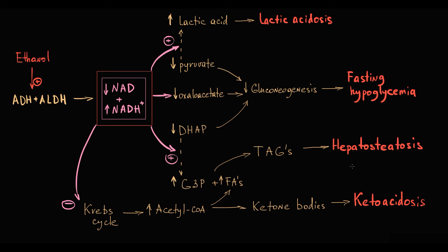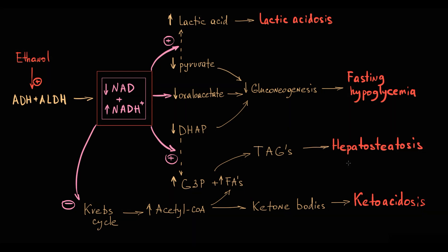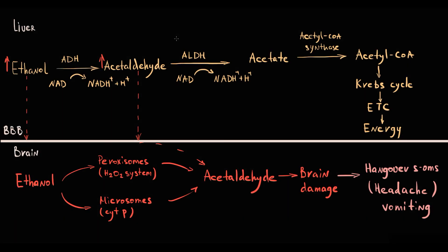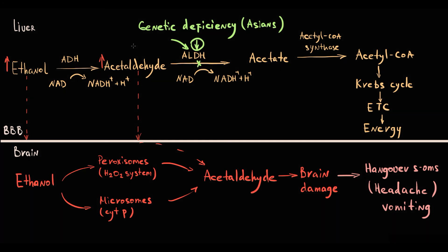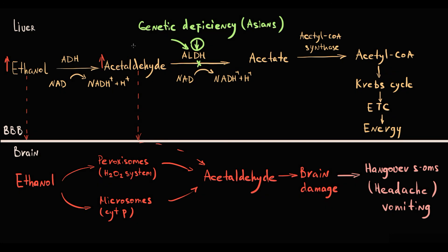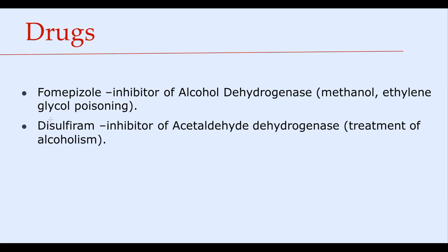In summary, ethanol metabolism causes four major manifestations: lactic acidosis, fasting hypoglycemia, ketoacidosis, and hepatosteatosis. Additionally, in some individuals, mitochondrial acetaldehyde dehydrogenase can be deficient, making oxidation of acetaldehyde even slower. In these cases, even a small amount of alcohol can induce massive accumulation of acetaldehyde, causing significant brain damage — making these individuals alcohol intolerant.